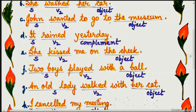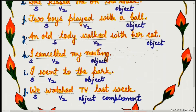Example F: Two boys played with a ball. 'Two boys' is the subject, 'played' is V2, and 'a ball' is the object.